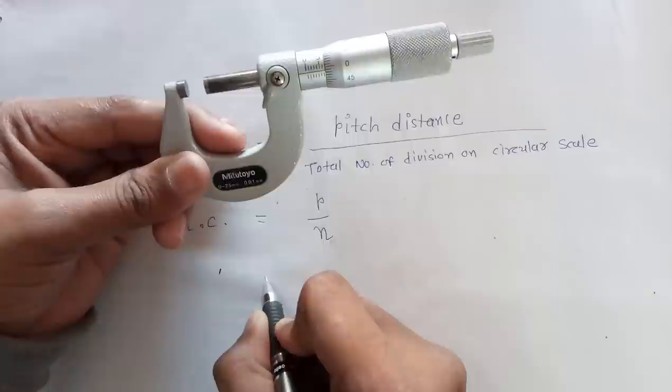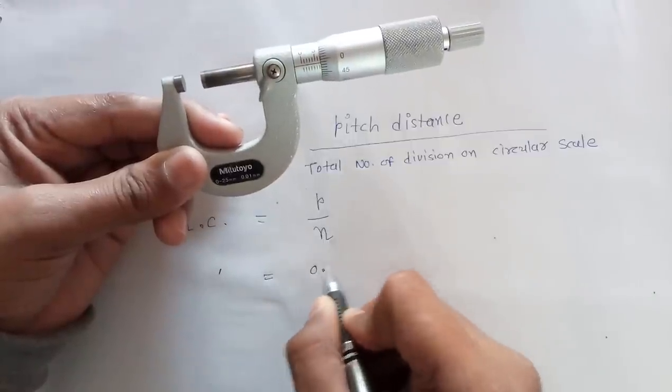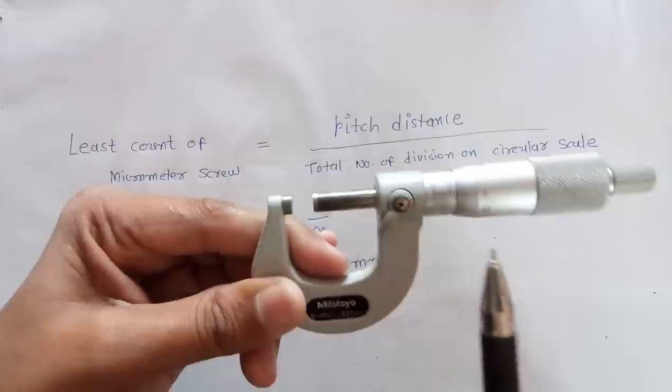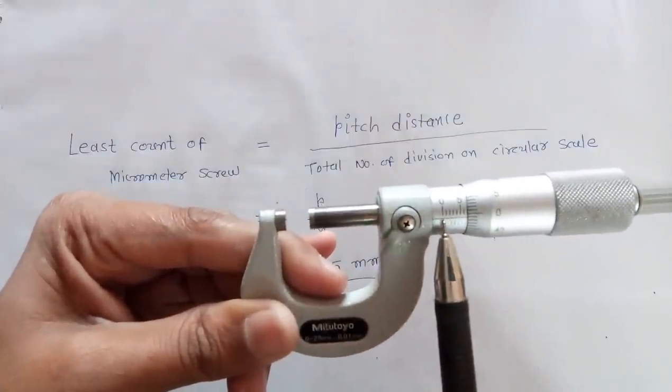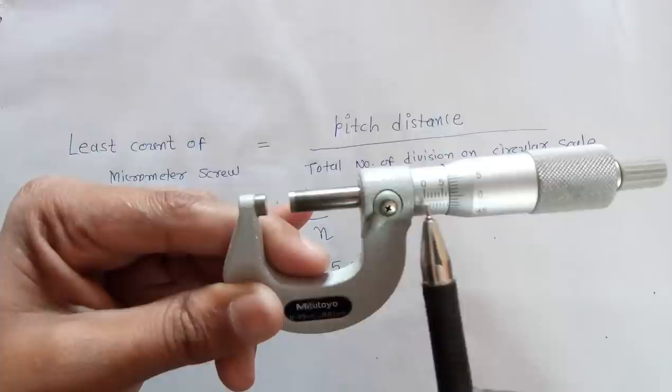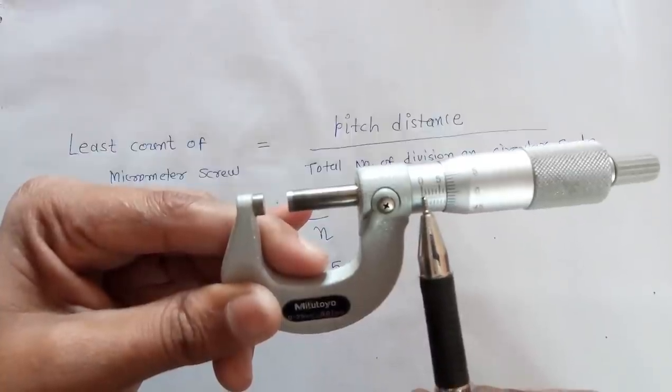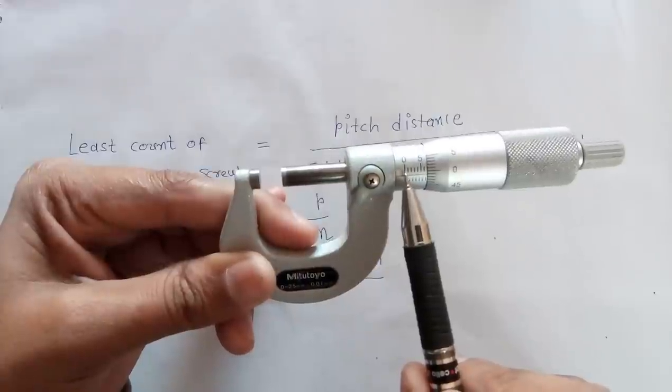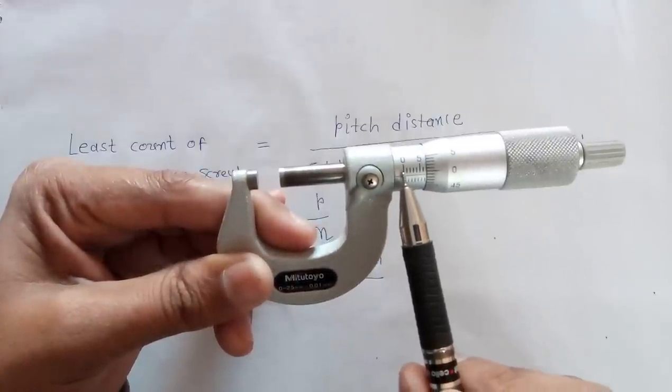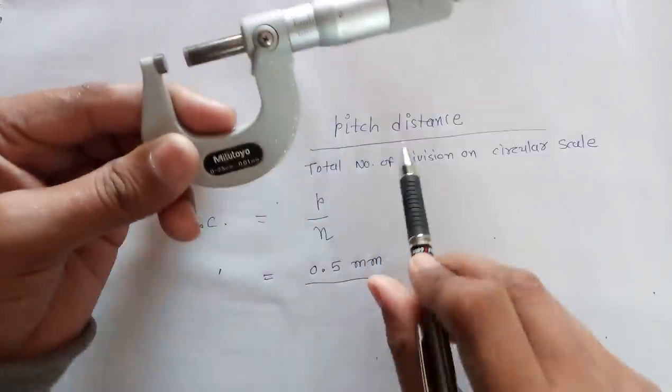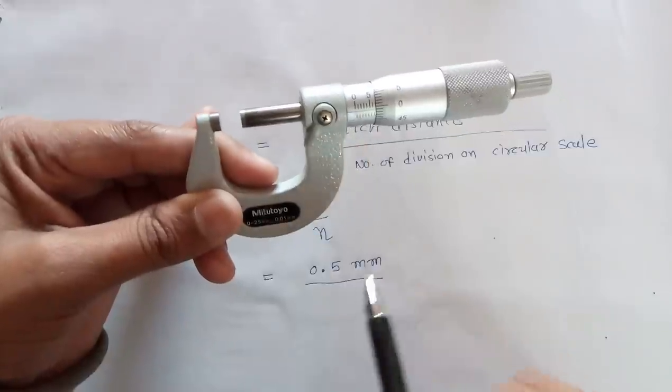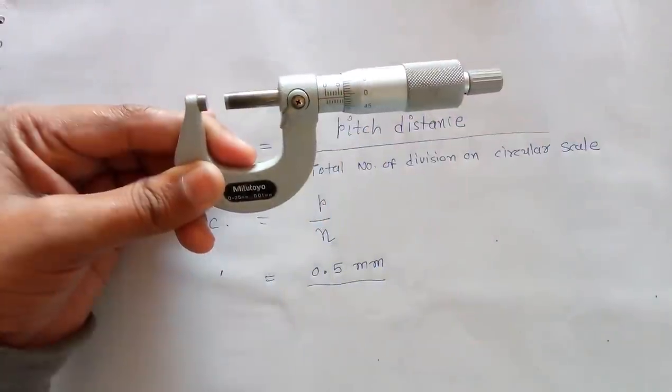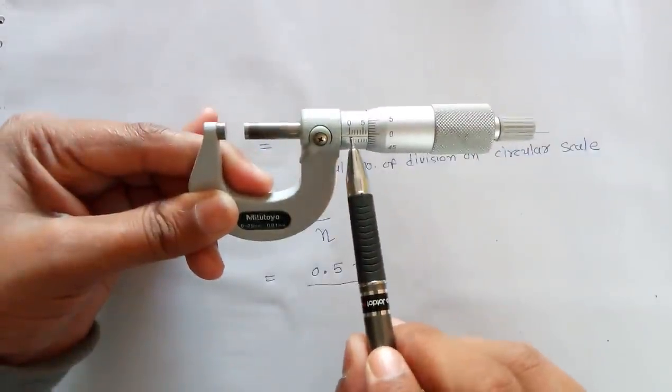So we can write pitch distance is equal to 0.5mm. In some case the pitch distance may be 1mm also. But in our case the pitch distance is 0.5. Means smallest division is 0.5. So pitch distance is equal to 0.5mm. This is smallest division on main scale.